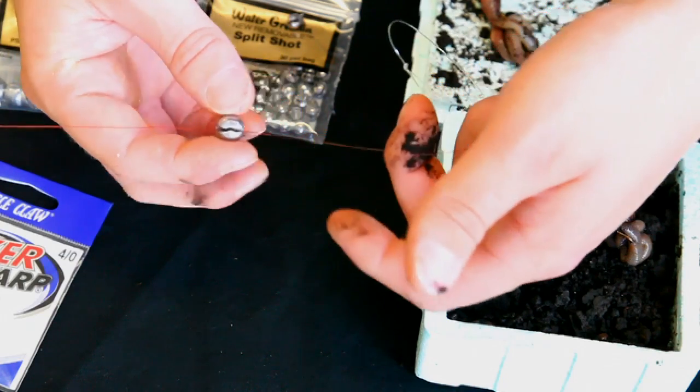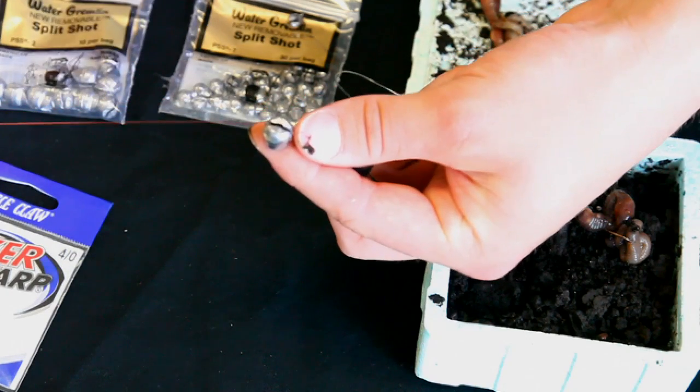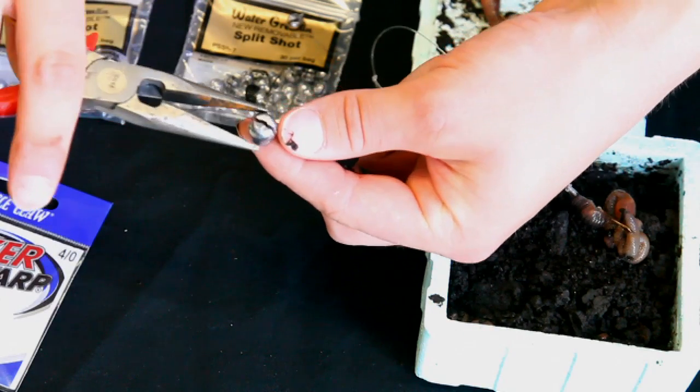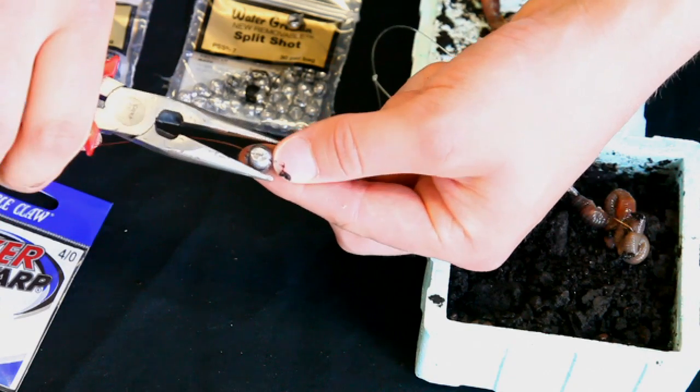The way to put these on is you need to put your fishing line through the big split on the front of it. Take a pair of pliers, clamp the weight down onto the line.